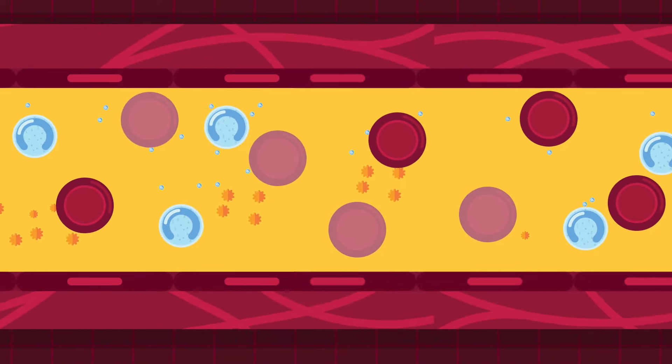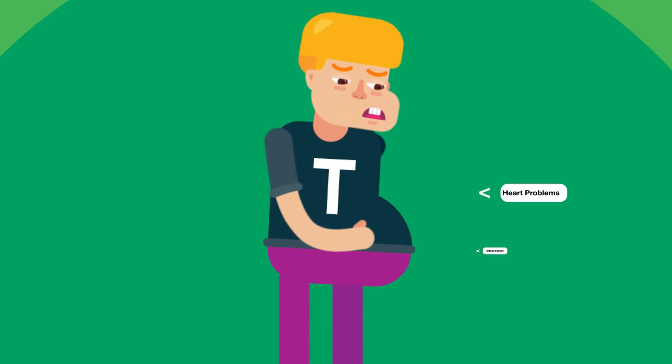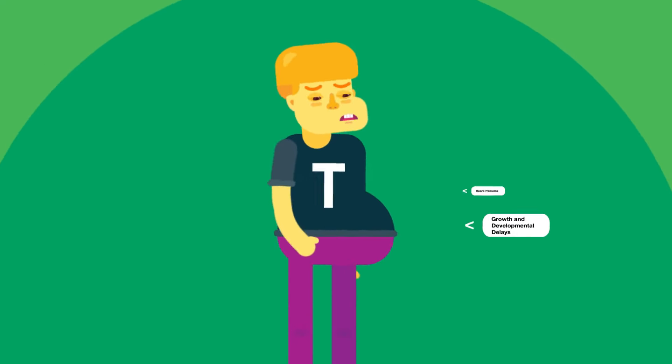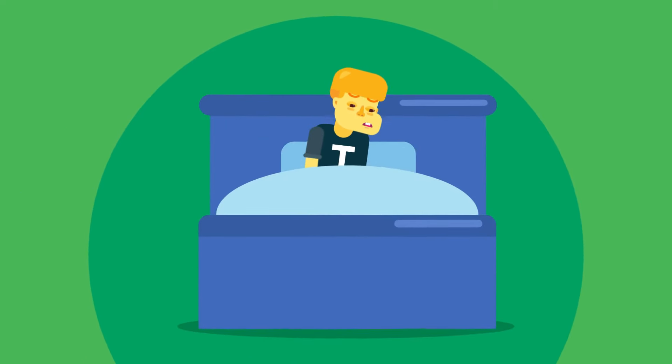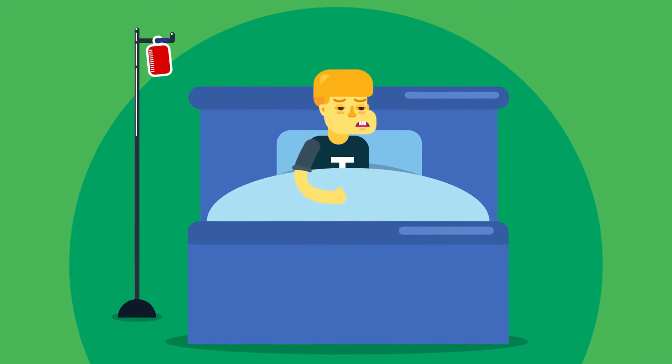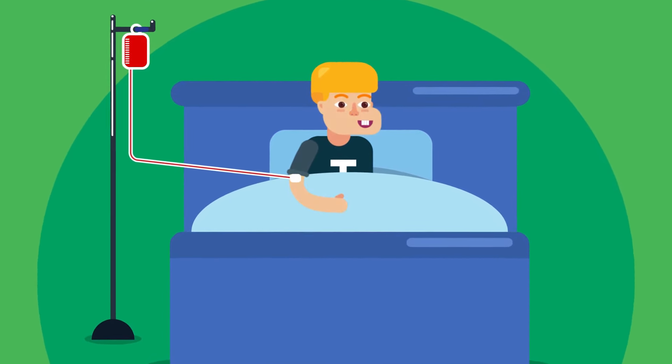These disorders can result in bone deformities, enlarged spleen, heart problems, growth and developmental delays in children. People who suffer from thalassemia need to undergo regular blood transfusions to maintain healthy RBC and hemoglobin levels in the body.